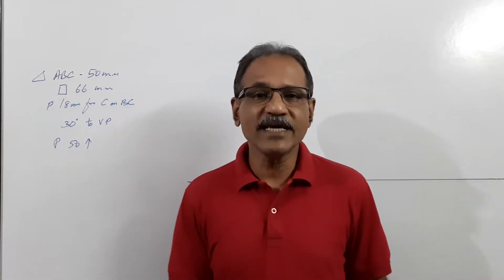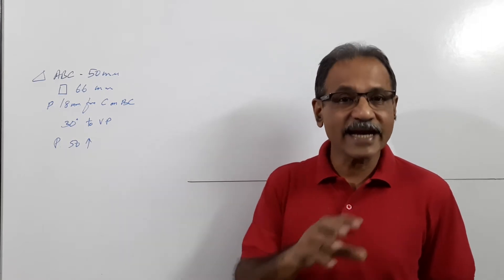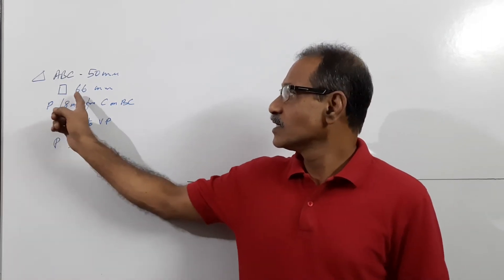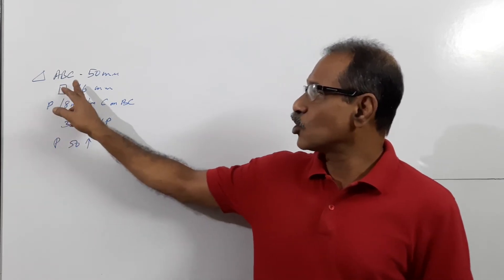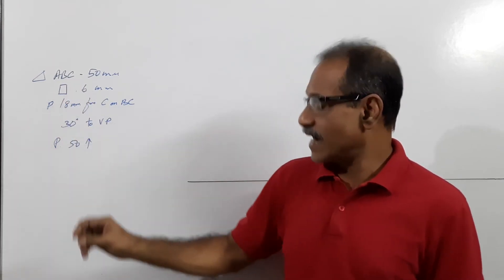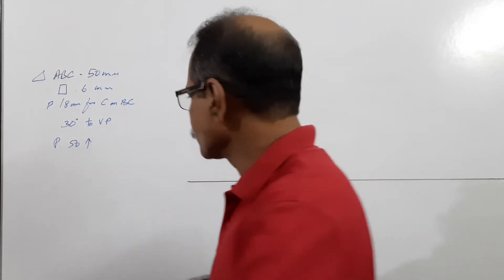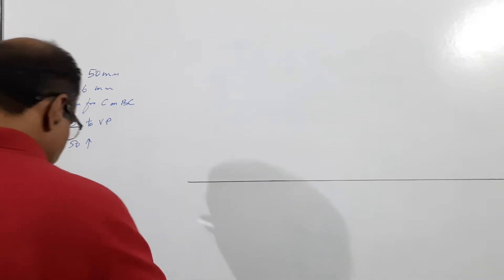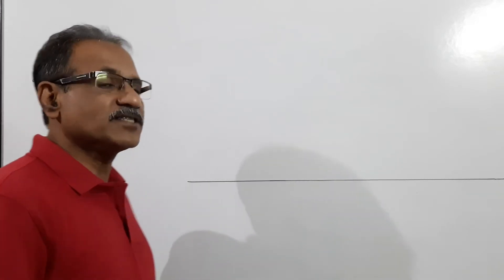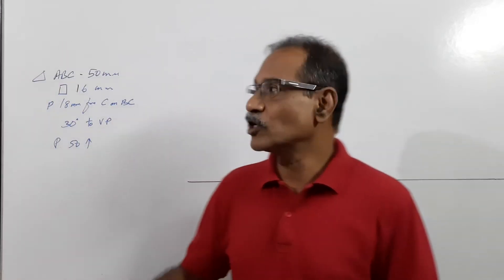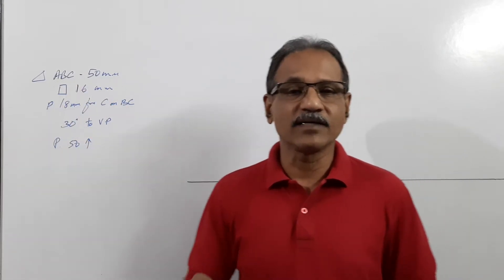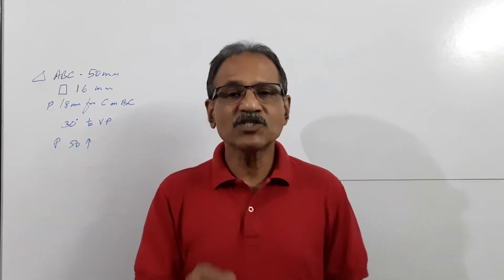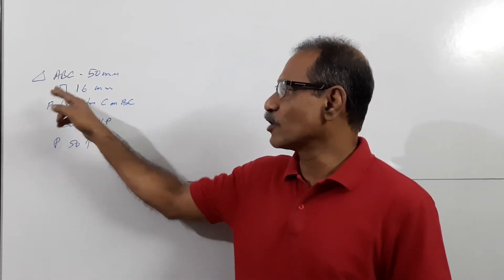The question says: a triangle ABC, 50 mm side, has a square hole of 16 mm side at its center. One side of the square hole is parallel to the side AB of the triangle.